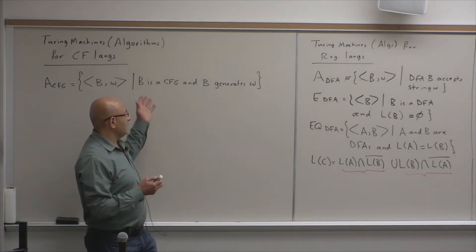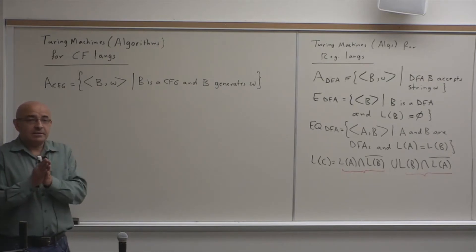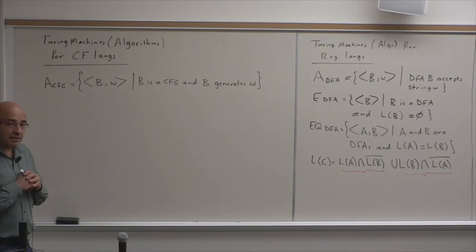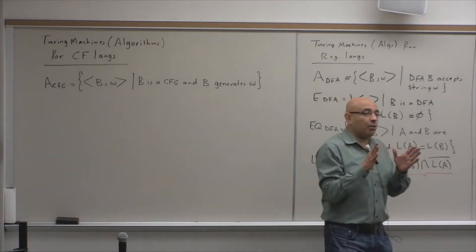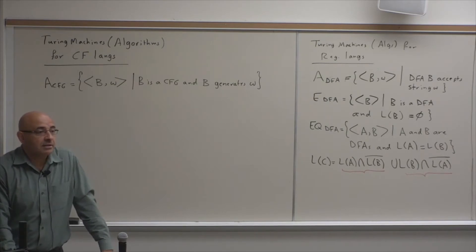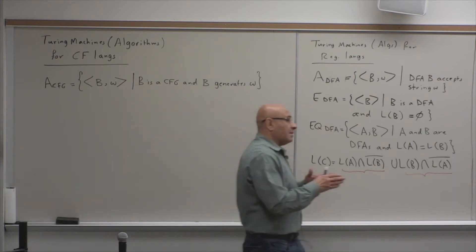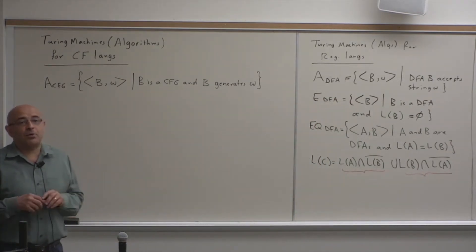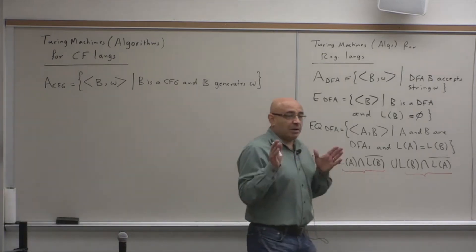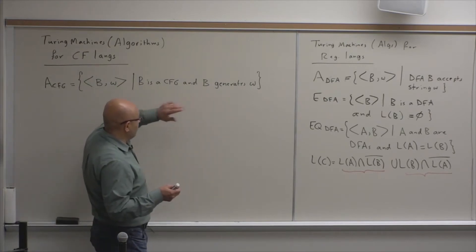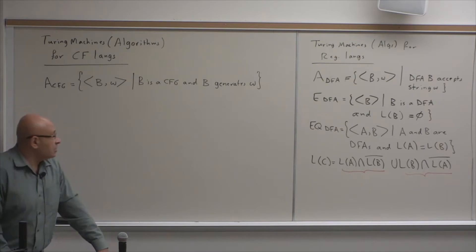This is parsing. Parsing is determining — given a grammar and a string — whether this grammar derives this string. In the context of compilers and programming languages, you have a grammar that defines the programming language, and your string is the program. A program is just a sequence of symbols belonging to a certain alphabet, and parsing determines if that string can be generated using the given context-free grammar.